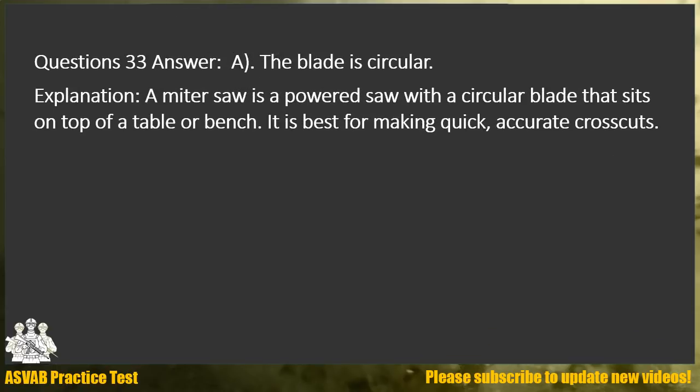Question 33. Answer A. The blade is circular. Explanation: A miter saw is a powered saw with a circular blade that sits on top of a table or bench. It is best for making quick, accurate cross-cuts.